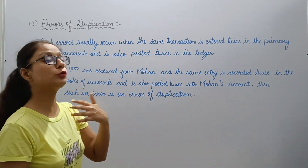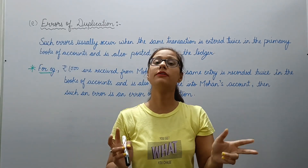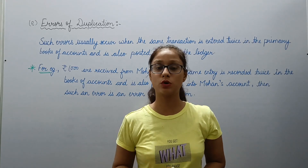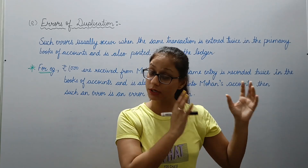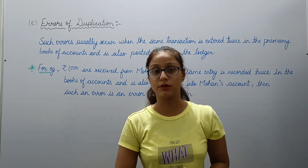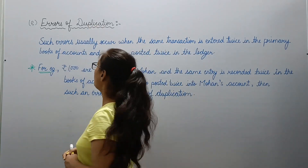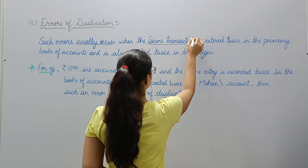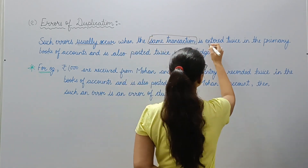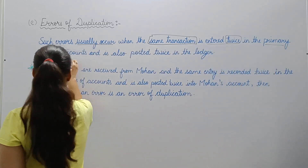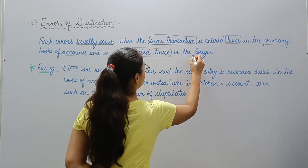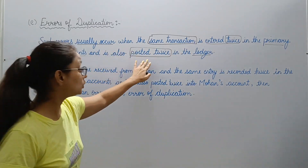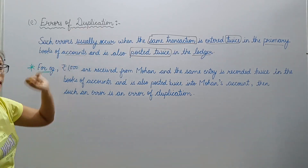Error of duplication — what does error of duplication mean? It means making duplicate entries, that is, recording one transaction two times. For example, if you made a purchase, you recorded the purchase amount two times, or the account of the person from whom you purchased — in that particular person's account you recorded the transaction twice. Such errors occur when the same transaction is entered twice in the primary books of accounts and is also posted twice in the ledger.